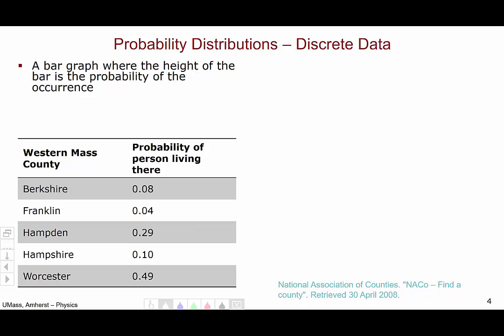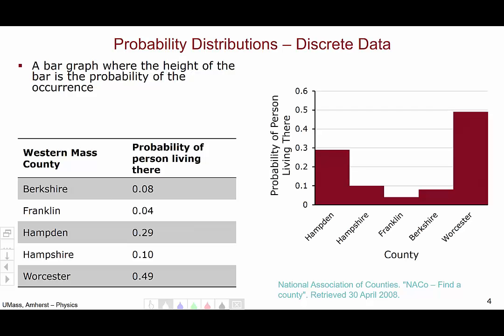A probability distribution is a bar graph where the height of the bar is the probability of the occurrence. So for these data, a probability distribution would look something like this. We can see each county listed on the horizontal axis, and the height of the bar indicates the probability of the person living there.